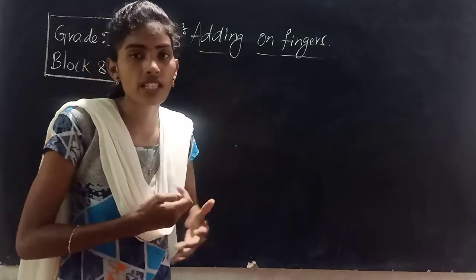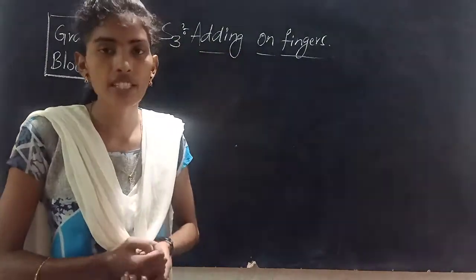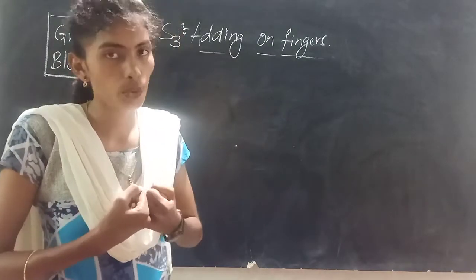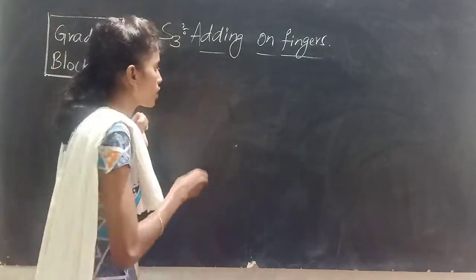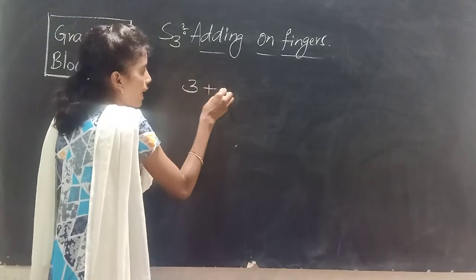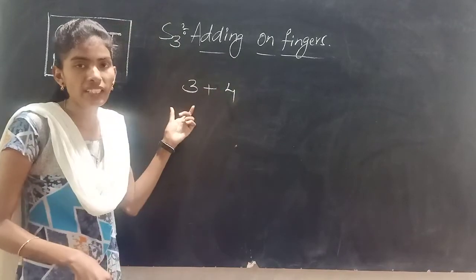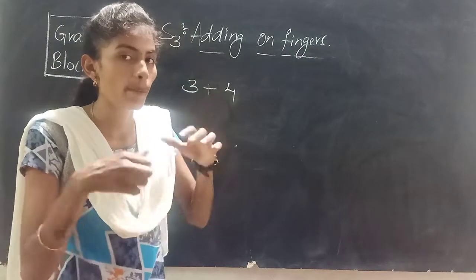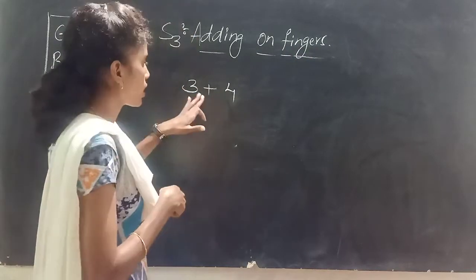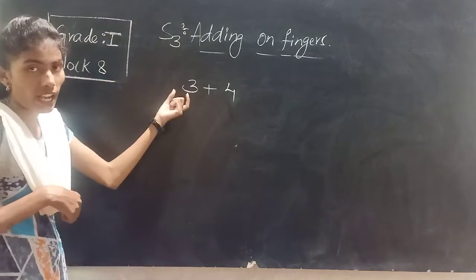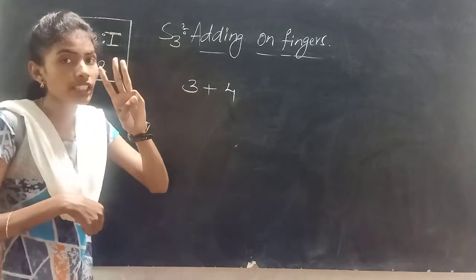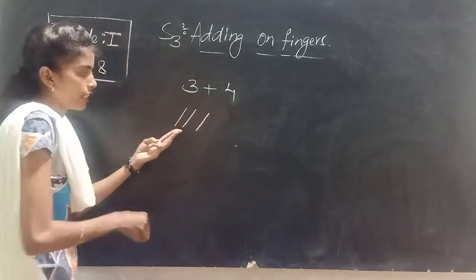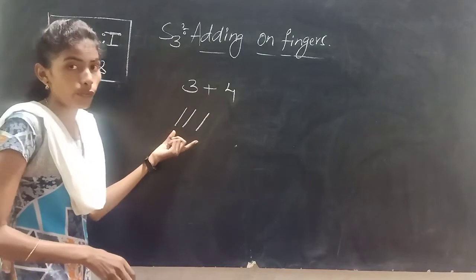Now S2 — adding on fingers. This is also a very easy topic. Adding means we have to add things together. Now see, I have three plus four. I want to add three and four by using my fingers. I have three first, so I am taking three fingers — one, two, three. Imagine these are my fingers.